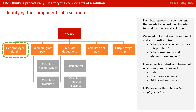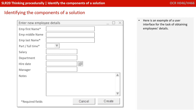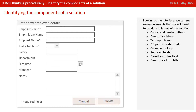Let's start by considering the subtask 'Get Employee Details'. Here's one suggestion of an example of a user interface for the task of obtaining the employee's details at the start of the program. Looking at the interface, we can see several elements that we will need to produce to get this part of the solution working.